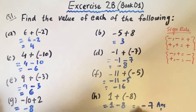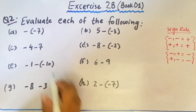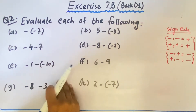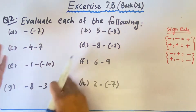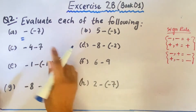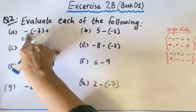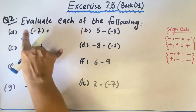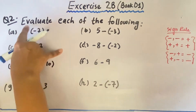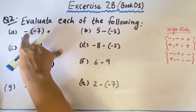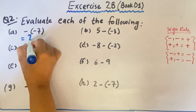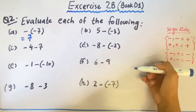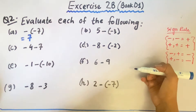Now let's move to question number 2. In question number 2, we are asked to evaluate each of the following. The same thing — we are going to open the bracket with the sign rule. In part A, we have two signs: one outside the bracket and one inside. Negative, negative — minus, minus equals plus. In multiplication we just solve the sign and write the number.